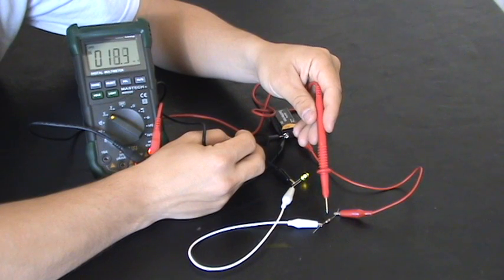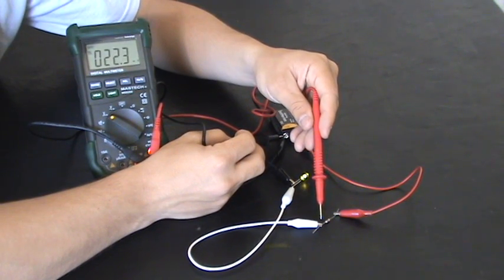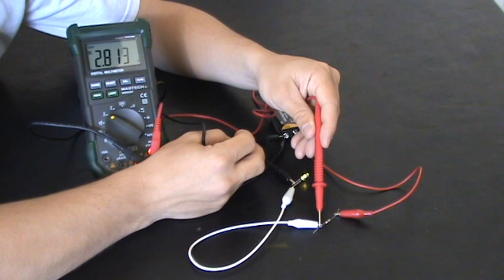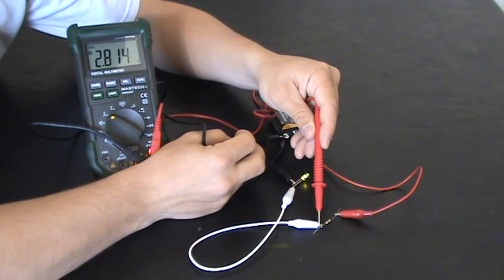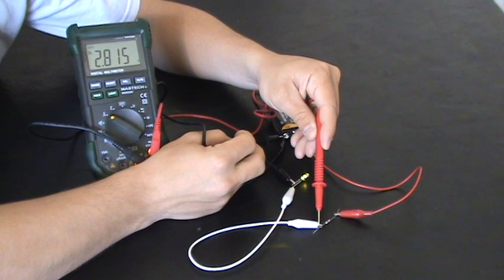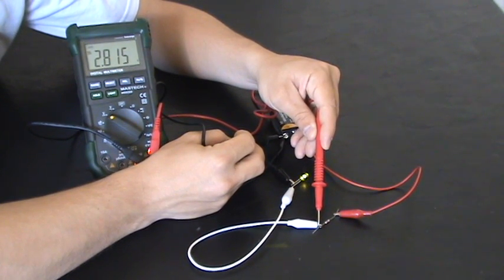But let's see what happens if we move it right after the resistor. If we move it right after the resistor, then we get a reading of 2.815 volts. And this is because the resistor is doing its job.